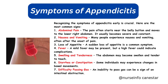Symptoms of Appendicitis. Recognizing the symptoms of appendicitis early is crucial. Here are the most common signs. 1. Abdominal pain: The pain often starts near the belly button and moves to the lower right abdomen, and usually becomes severe and constant. 2. Nausea and vomiting: Many people experience nausea and vomiting, often after the onset of pain. 3. Loss of appetite: A sudden loss of appetite is a common symptom. 4. Fever: A mild fever may be present, but a high fever could indicate complications.